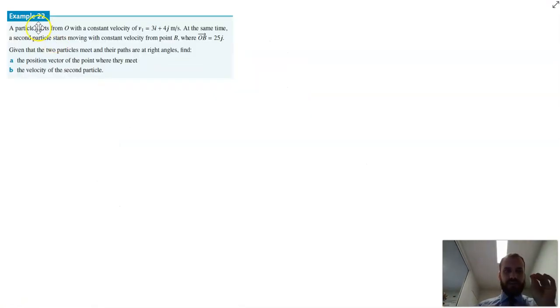A particle starts from O with a constant velocity of 3i plus 4j. That's handy numbers. The magnitude must be 5. At the same time, a second particle starts moving with a constant velocity from point B, where OB equals 25j. Given that the two particles meet and their paths are at right angles, find the position vector and the velocity.